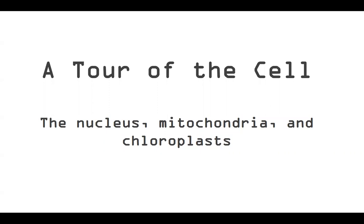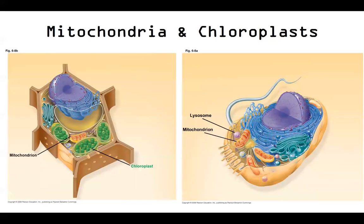Welcome back. Today we're going to be talking about mitochondria and the chloroplast. In the last video we talked a lot about the nucleus, so let's get into some of these other organelles. Mitochondria and chloroplasts are organelles — chloroplasts found in the plant cell, mitochondria in both.